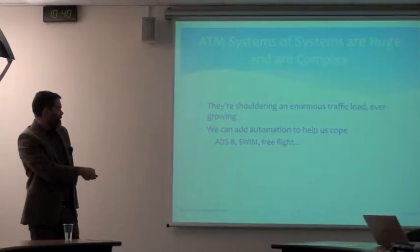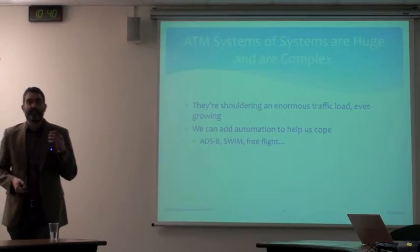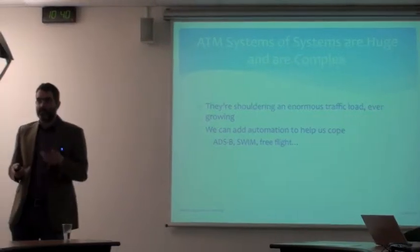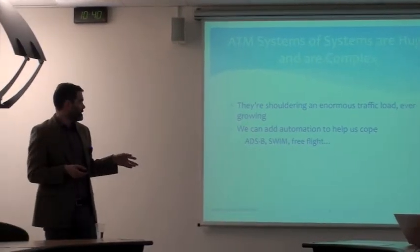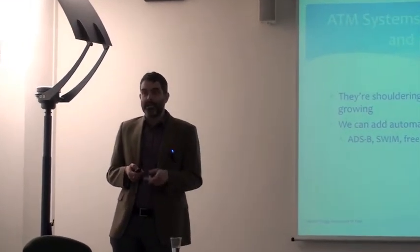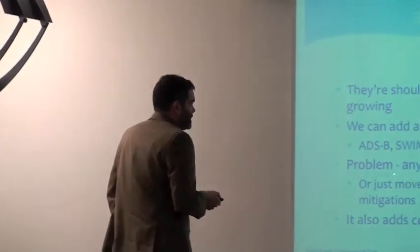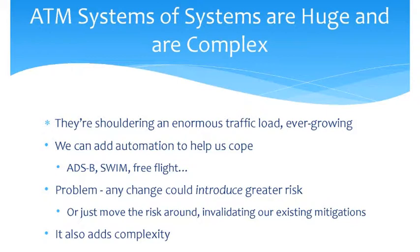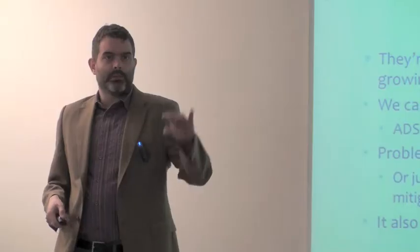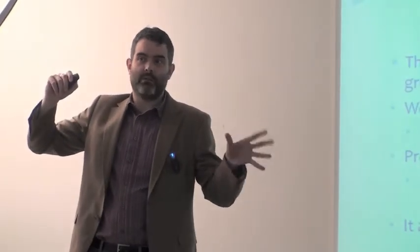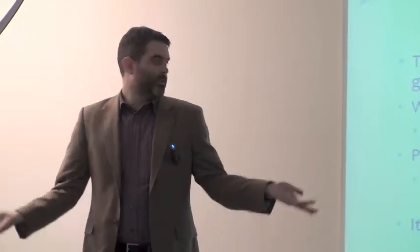We can add automation to help cope — it can take some of the load, make things more efficient, and make things safer. ADSB for planes to communicate, SWIM to get ground stations with unified information, potentially free flight where we don't need that tight link between ground and air. But all of these could introduce greater risk; they'll change the risk behavior of the airspace and introduce new ways for problems to arise, or just move the risk around.